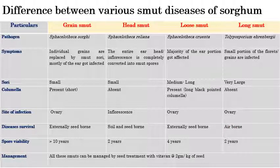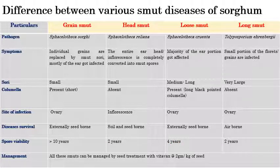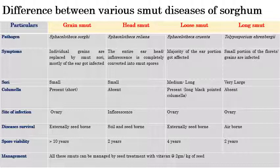Regarding spore survivability in soil: grain smut spores can survive more than 10 years; head smut can survive 2 years; loose smut can survive 4 years; and long smut can survive 2 years. All these smuts — grain smut, head smut, loose smut, and long smut — can be effectively managed by seed treatment with Vitavax at the rate of 2 grams per kilogram of seeds.